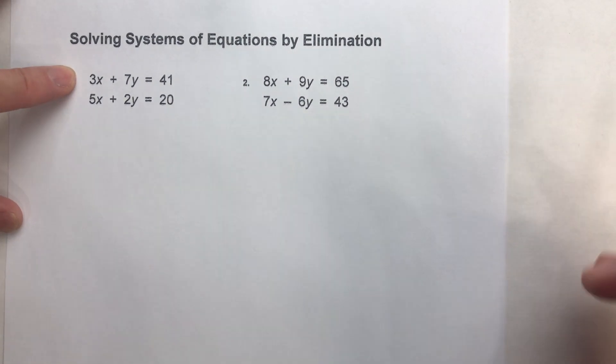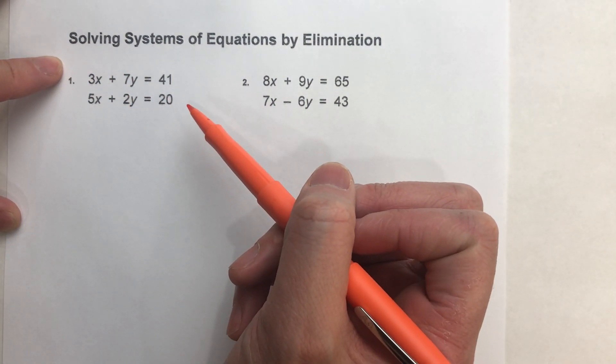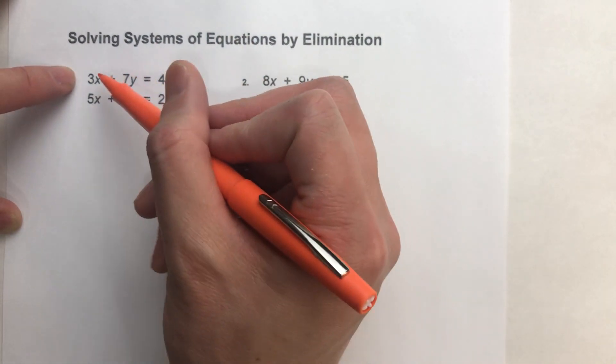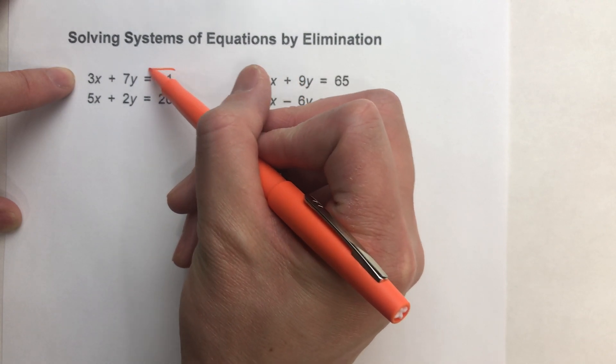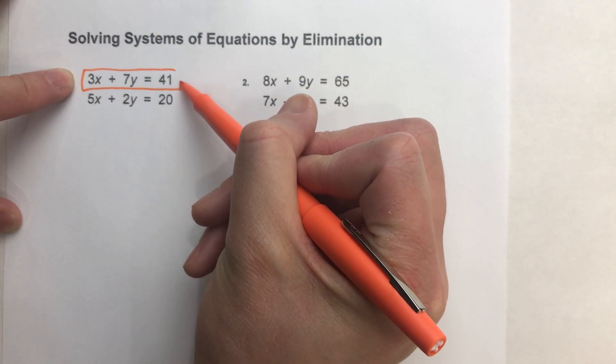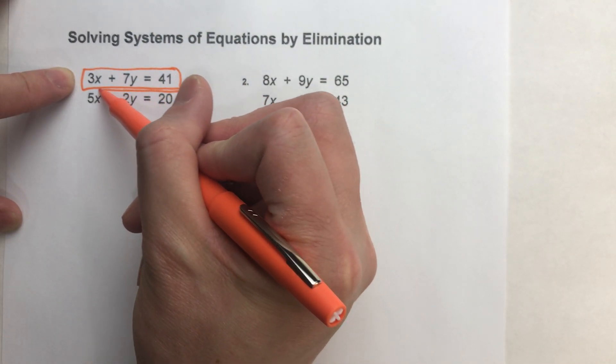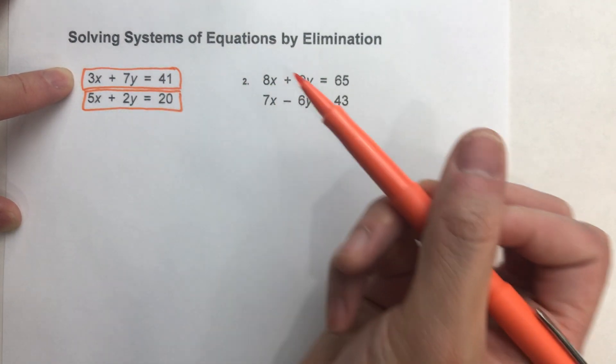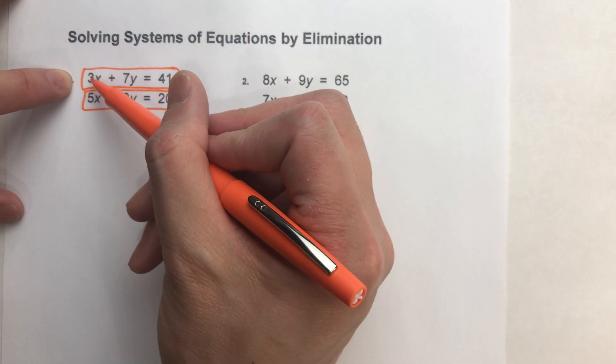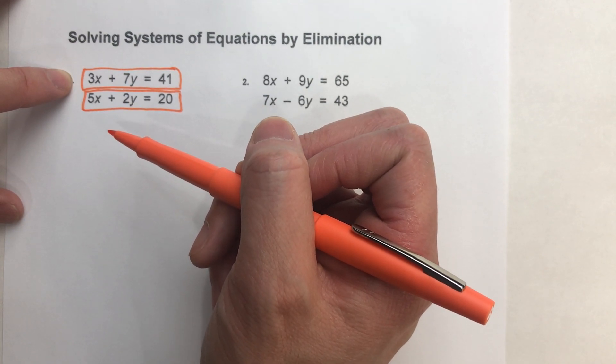What we're going to do is we're going to multiply both equations. And we're going to multiply it so that, in this case right here, I'm going to make the x's match up. So you have to think to yourself, what are we going to multiply them by? Well, I've got 3x and 5x. Let's make them 15x.